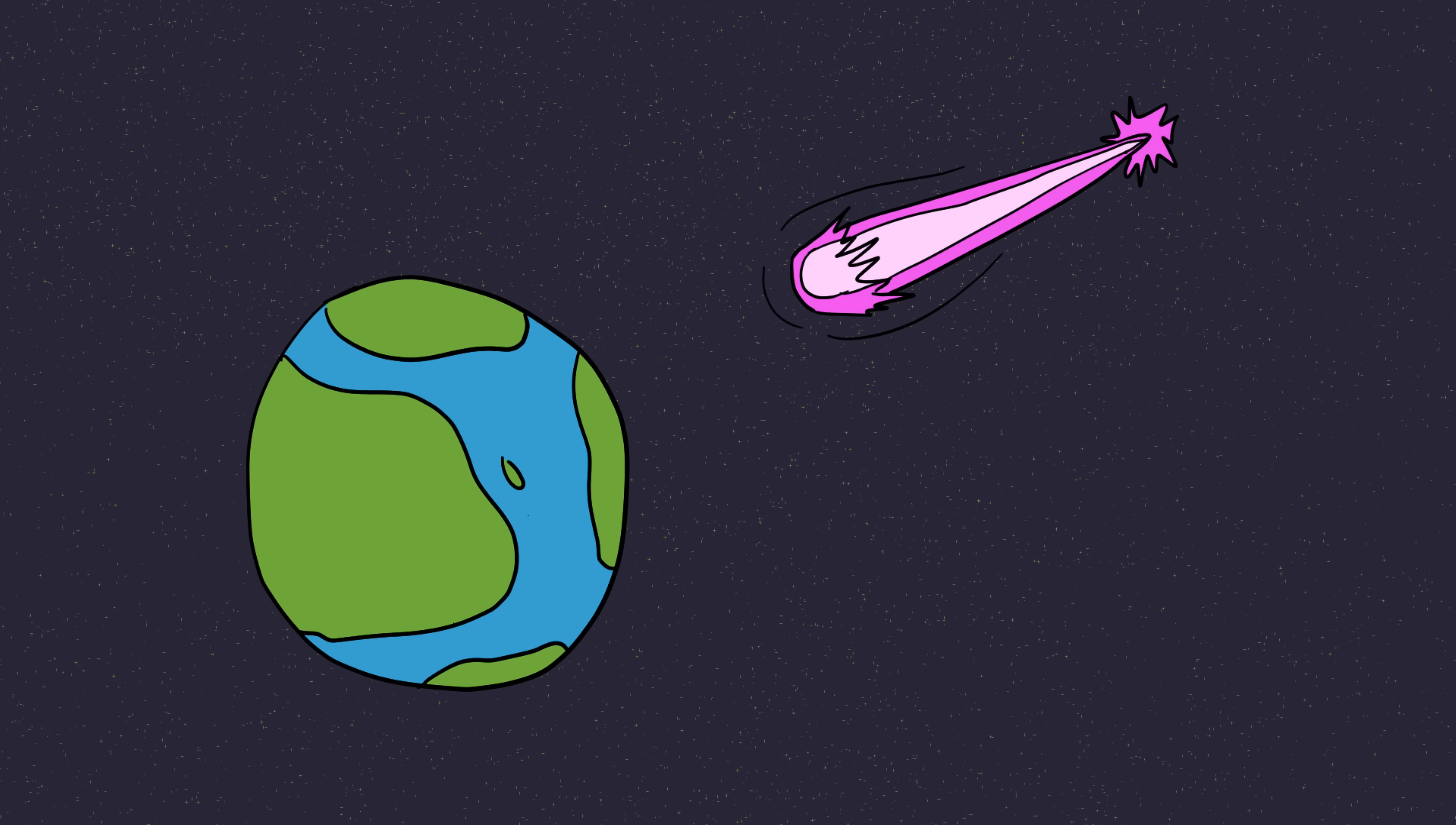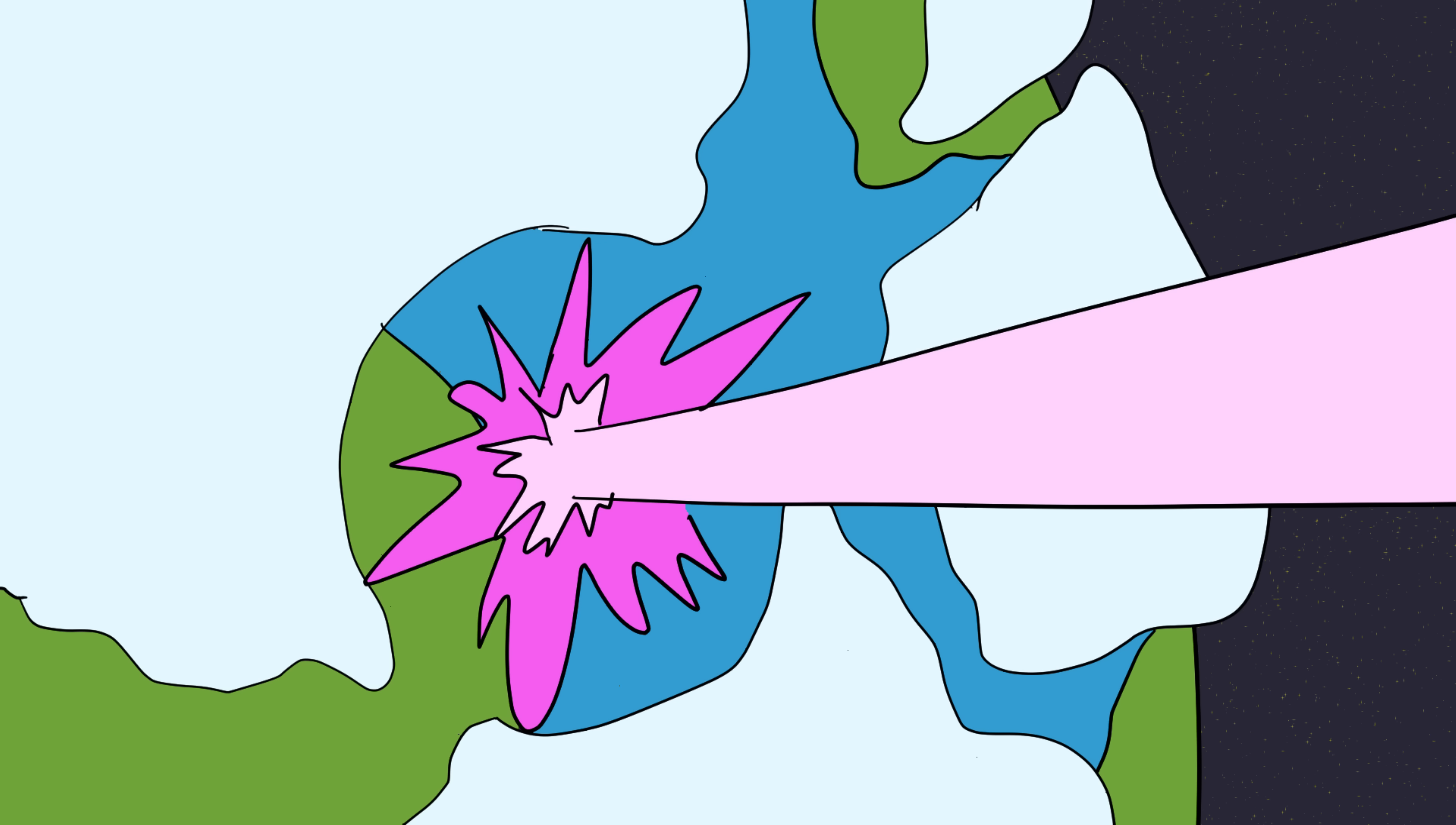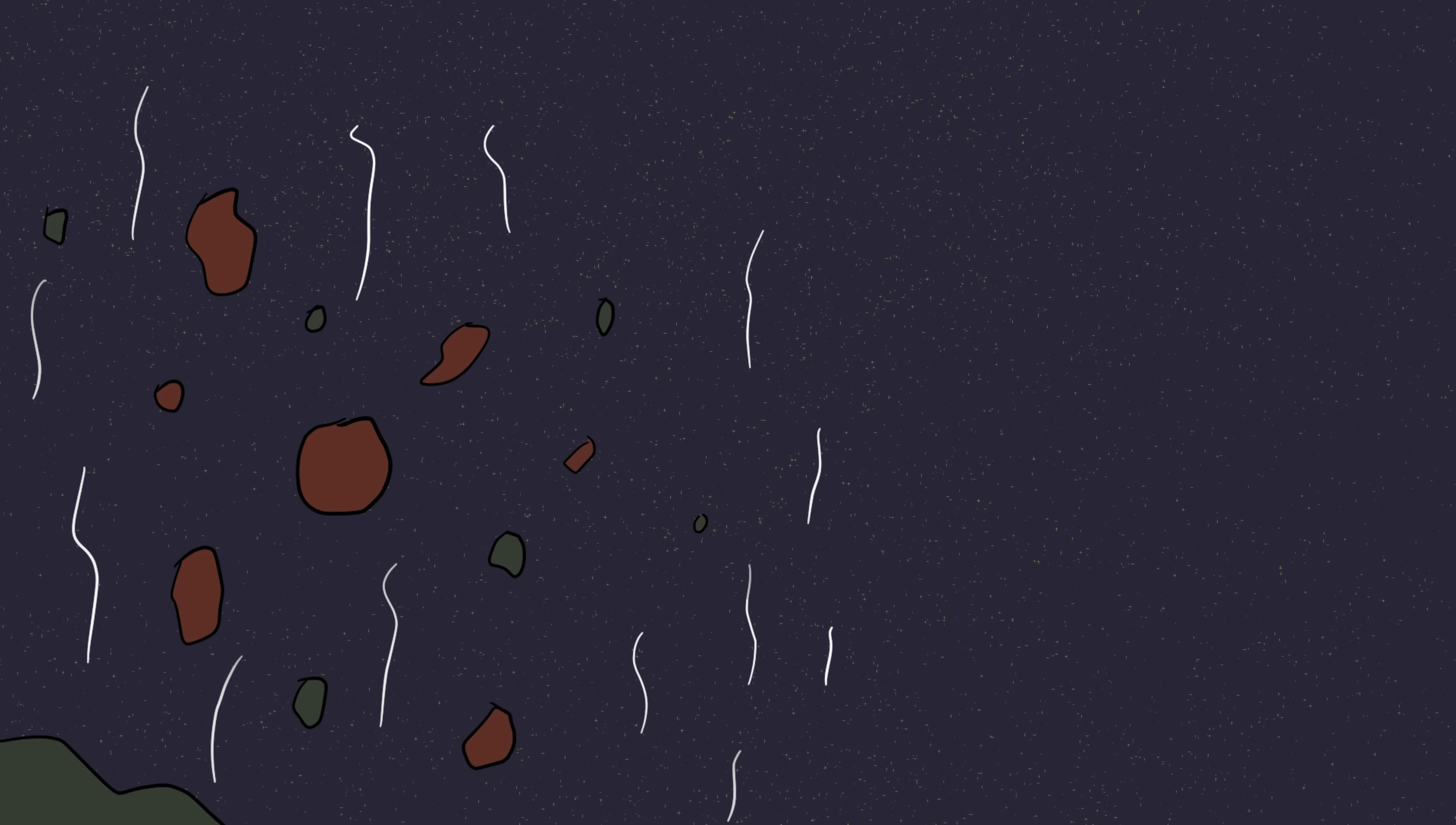And if Earth ever happens to be in the line of fire, well, that's it. Our ozone layer would vaporize, the sky would turn toxic, and within days, life as we know it would be toast. The worst part? We'd never see it coming.